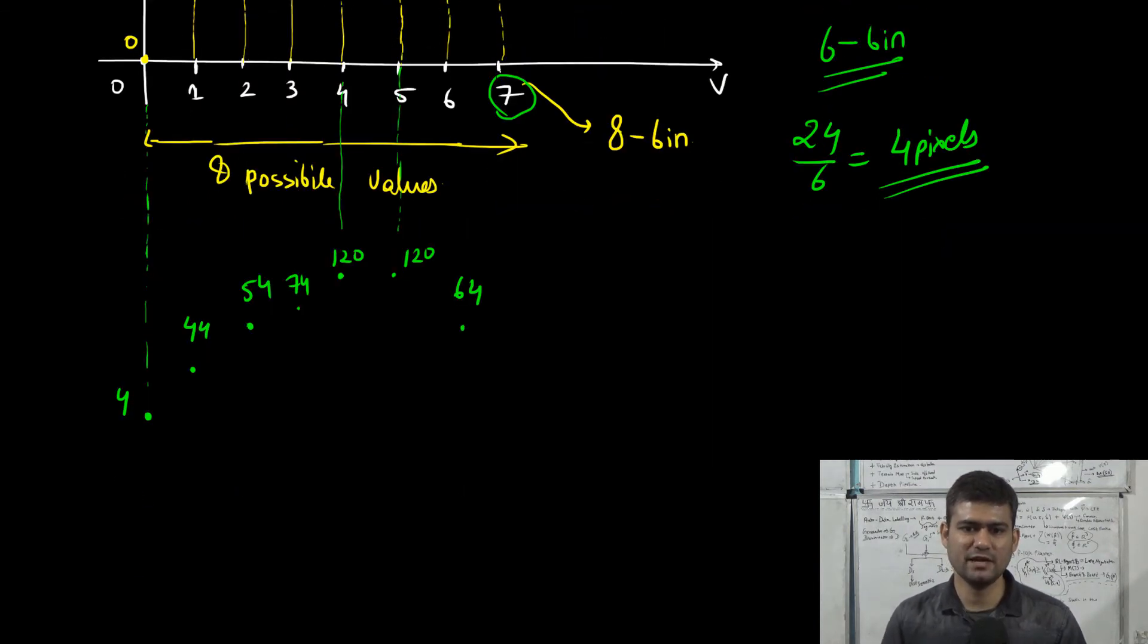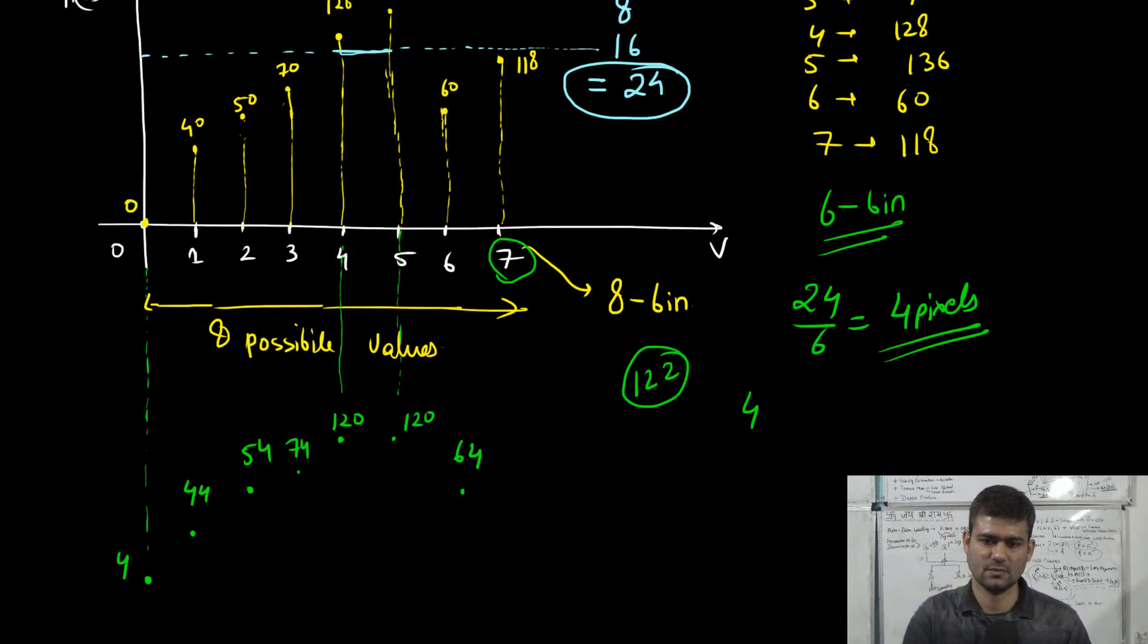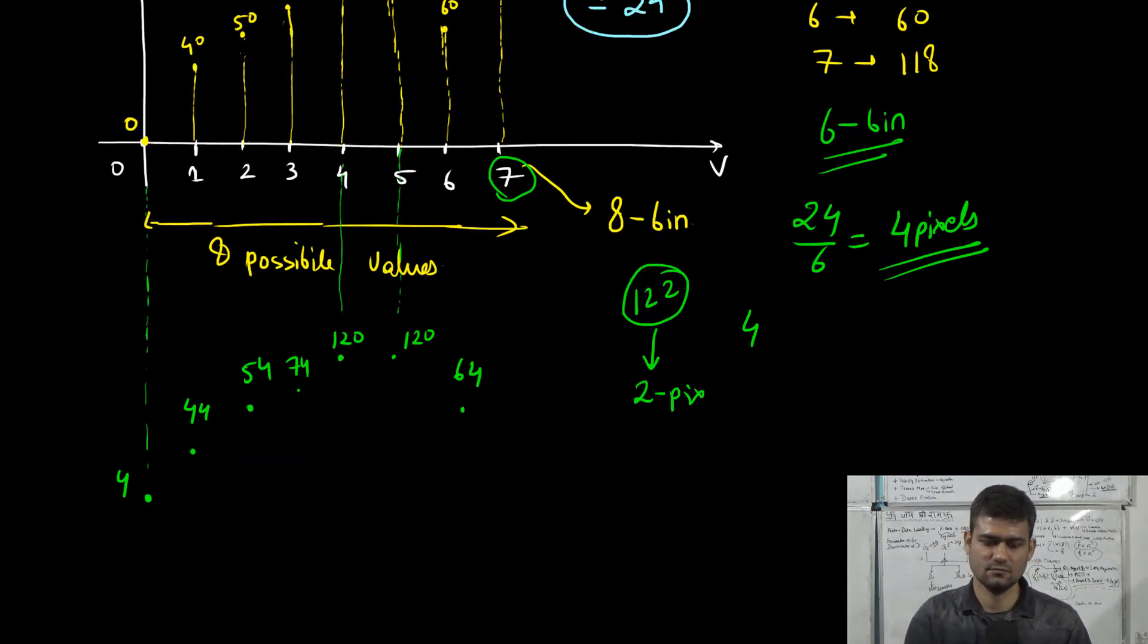We see that if we increase this bin by 4, then the resulting value would be 122. Therefore, we will increase this bin value by only 2 pixels. The new value of the last bin would be 120. And now we would have 2 remaining pixels.